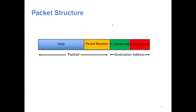Now this will be the packet structure. Every packet has an X and Y coordinate representing the destination PE's XY coordinate, or the switch XY coordinate connected to that PE. There will be a packet number for reordering later, followed by the payload. The payload size is not fixed — you can have an arbitrarily large payload.